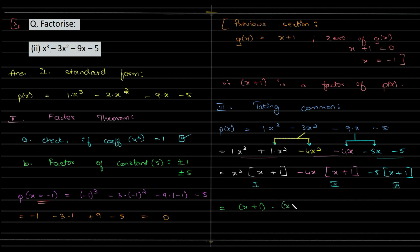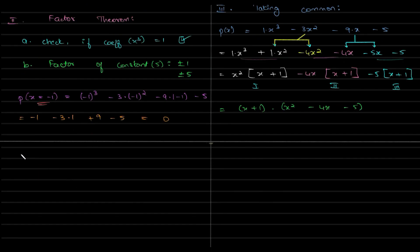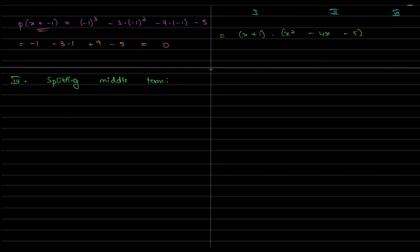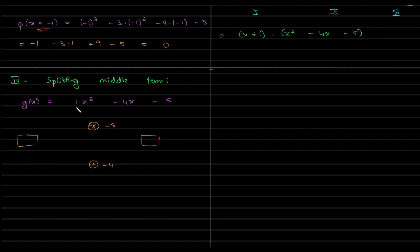Now we have x + 1 as common in all three groups, so what's left is x² minus 4x minus 5. You could also use polynomial division and get this as the quotient. The next step is to split the middle term. So g(x) equals x² minus 4x minus 5.